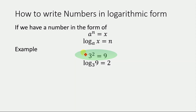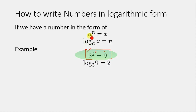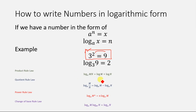Let's suppose we have 3 squared, and we know that 3 squared equals 9. We can write this equation in logarithmic form as log base 3 of 9 equals 2. We replace the exponent 2 and the result 9 while 3 becomes the base of the logarithm. So for any equation a to the power n equals x, we can write it in logarithmic form as log base a of x equals n. Using this method we will derive the four basic laws of logarithm.